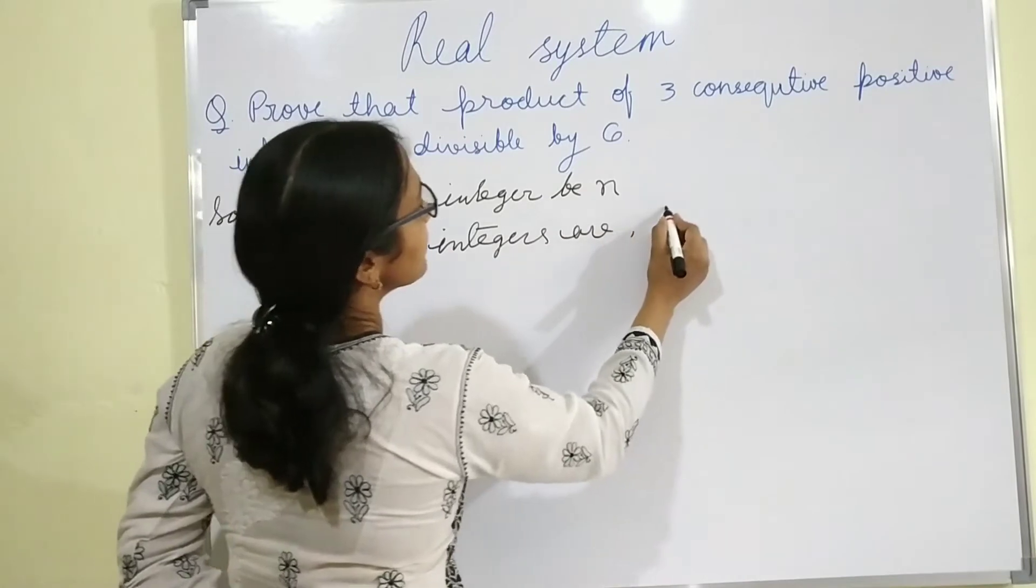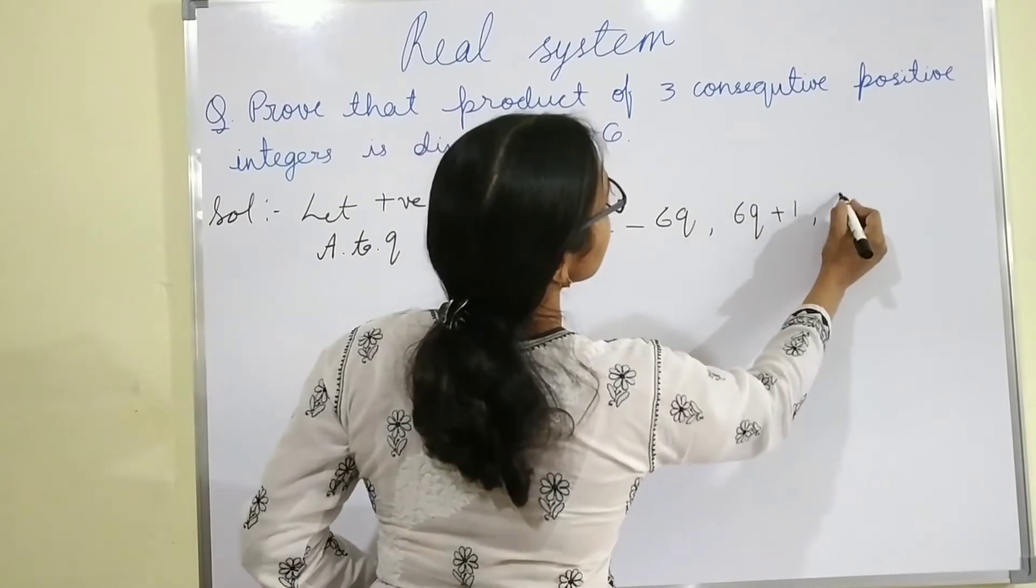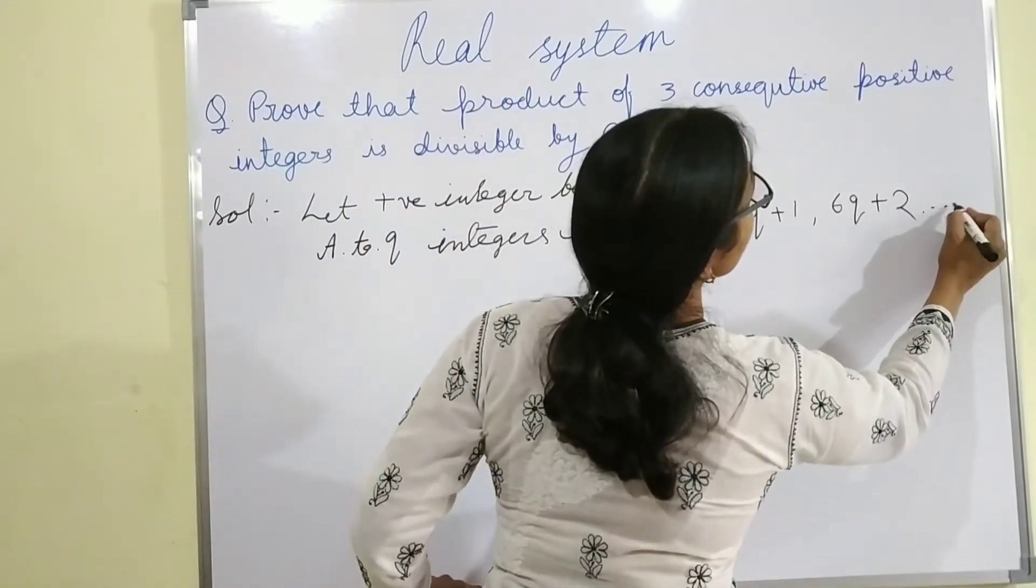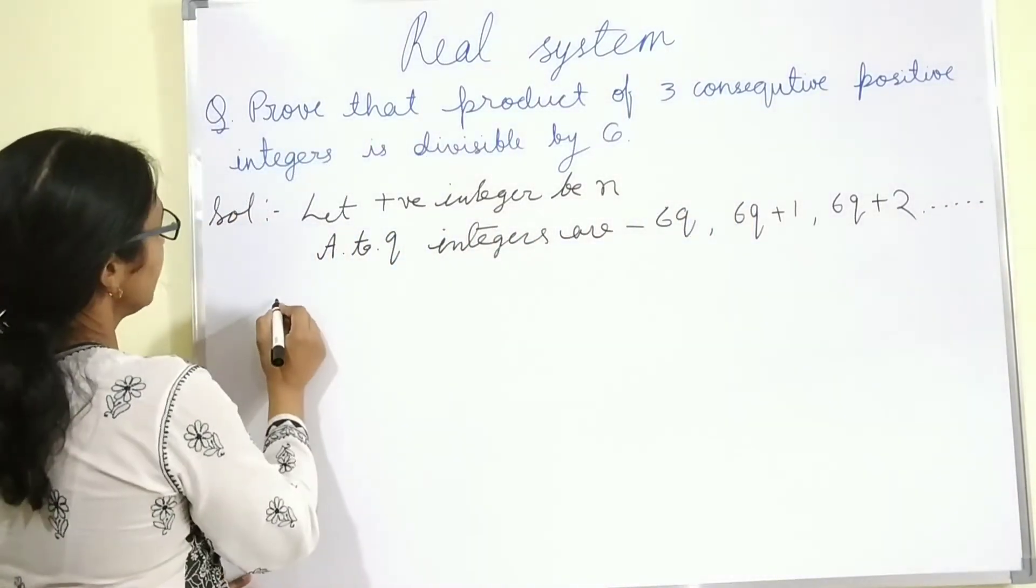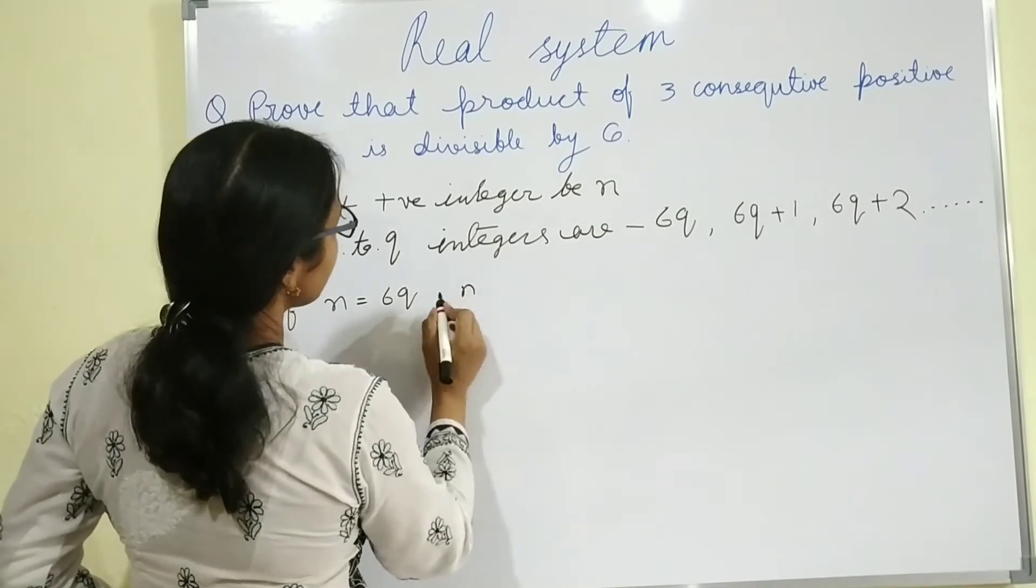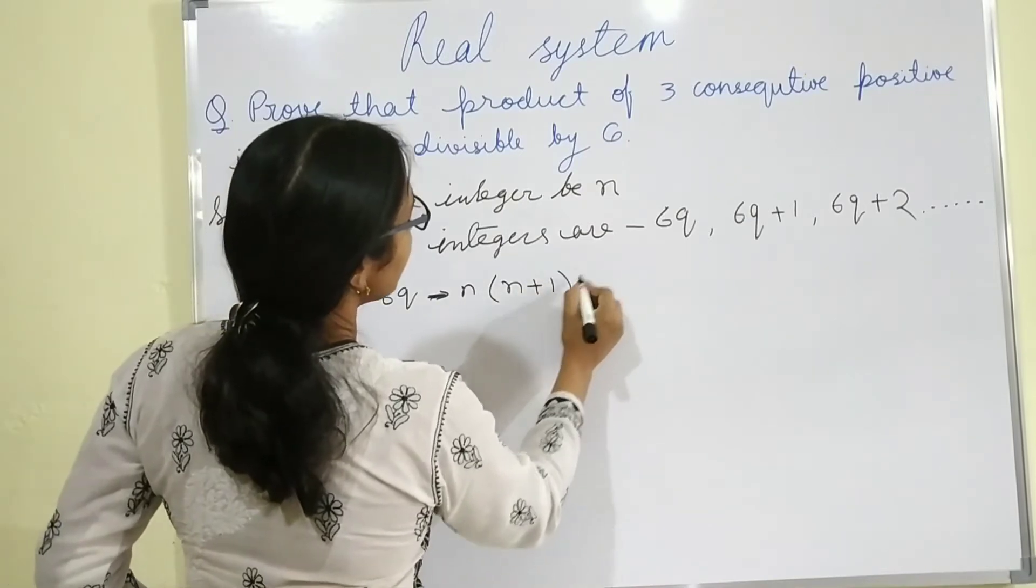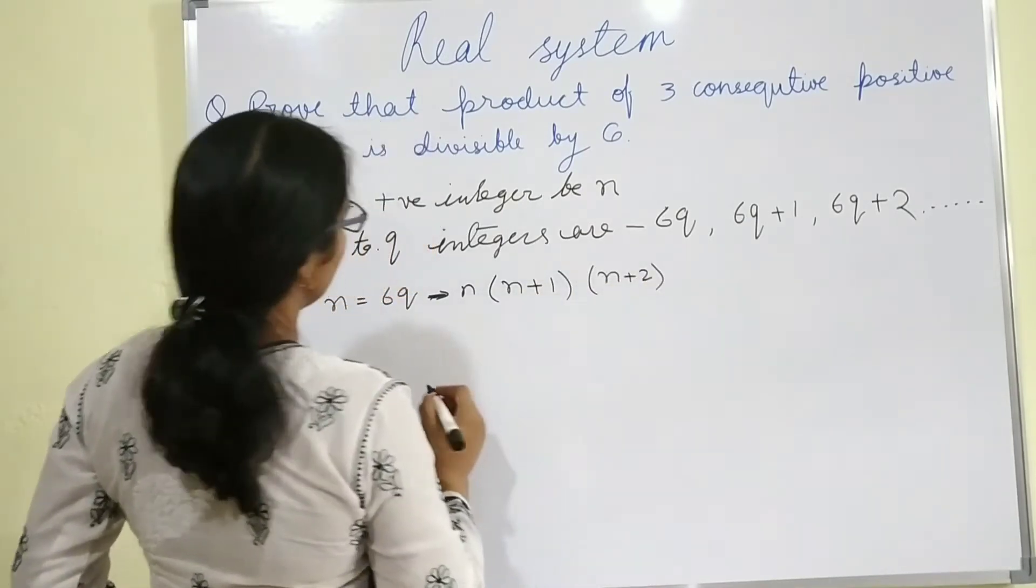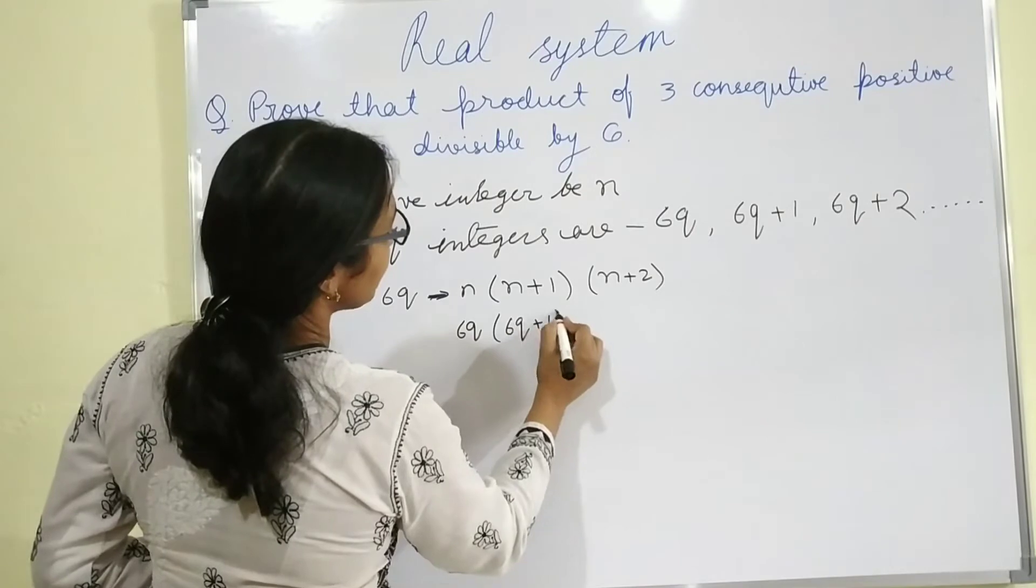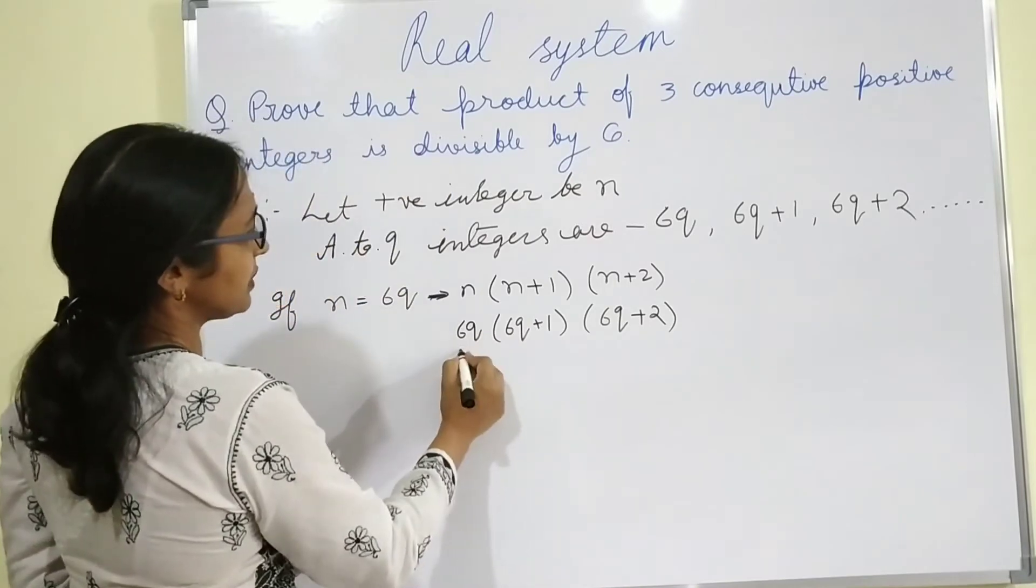Integers are 6Q, 6Q plus 1, 6Q plus 2, 6Q plus 3. So if N equals to 6Q, then N into N plus 1 into N plus 2, so N is 6Q, 6Q plus 1 and 6Q plus 2. It is divisible by 6.